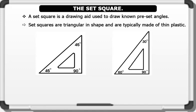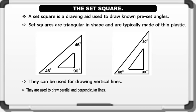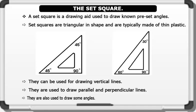The uses of a set square include: 1. They can be used for drawing vertical lines. 2. They are used to draw parallel and perpendicular lines. 3. They are also used to draw some angles.